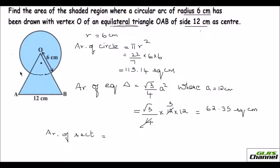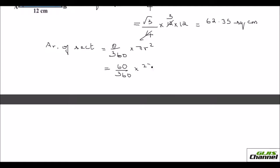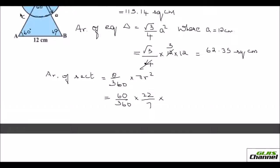To find the area of the sector, we know the angle because the triangle is equilateral, so each vertex is 60 degrees. The sector COD uses the formula θ/360 × π r², which is 60/360 × 22/7 × 6 × 6, giving 18.86 square centimeters.